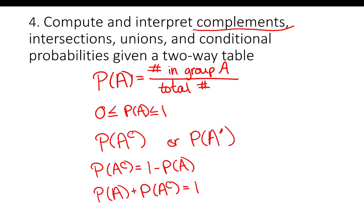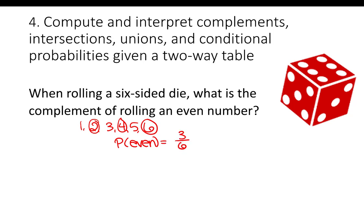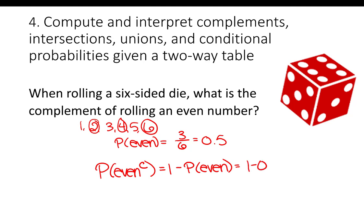Let's look at an example. When rolling a six-sided die, what is the complement of rolling an even number? A six-sided die has three even numbers, so P(even) = 3/6 = 0.5. The complement is 1 minus 0.5, which equals 0.5.